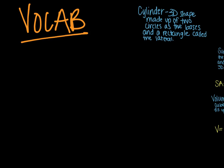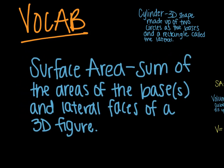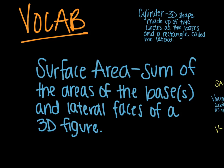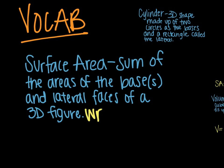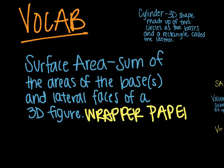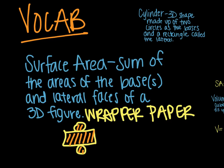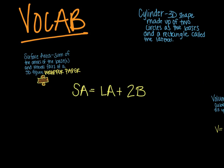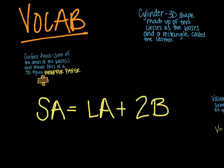Surface area is the sum of the areas of the bases and lateral faces of a three-dimensional figure. In other words, it is the wrapping paper — if you were to wrap something up, that would be the surface area. For example, here is an image of a flattened-out cylinder. The surface area is what I'm coloring in — it is the area of both circles and the lateral, which is the rectangle.